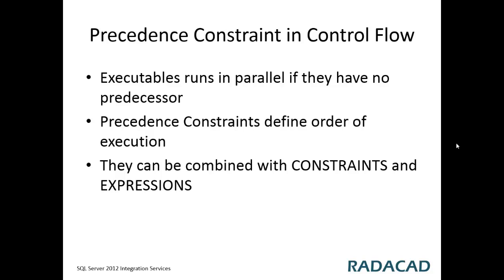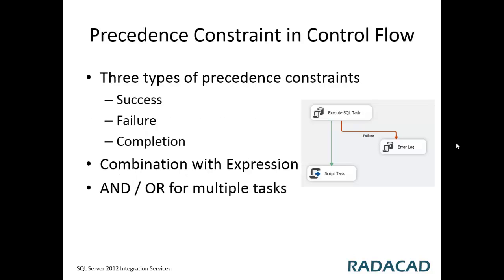Precedence constraints can also be combined with expressions. A precedence constraint is a combination of a constraint — which can be failure, success, or completion — combined with an expression. For example, if an execute SQL task failed, then execute this error log. If it was successful, do this script task. We can create another precedence constraint and say that if it was successful but a variable X was greater than 10, then do something else. We can use this combination with expressions to make things more powerful.